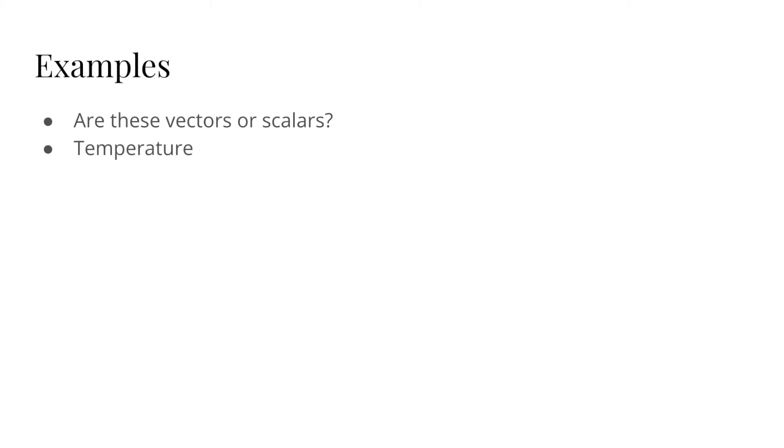So now that we've kind of got the basic understanding of what a scalar or vector is, let's go over a couple of examples to see whether we really understand the difference between scalars and vectors. So the first one here we have is temperature. Think about it. When we think of temperature, do we give it a specific direction or do we specify it by a simple value, a number, a size?